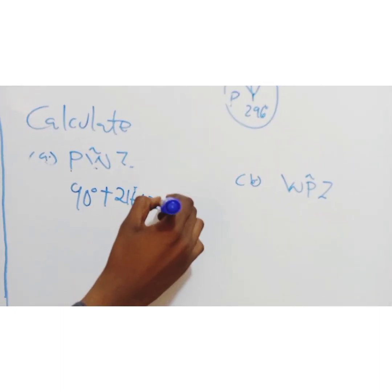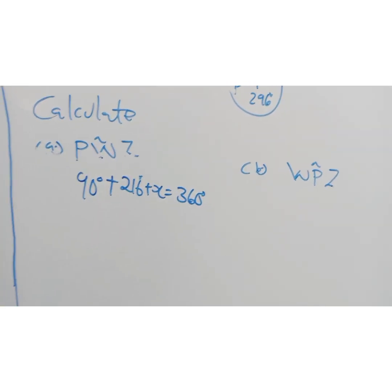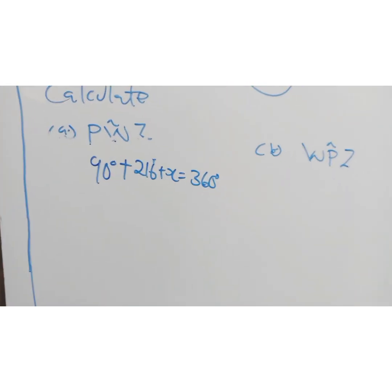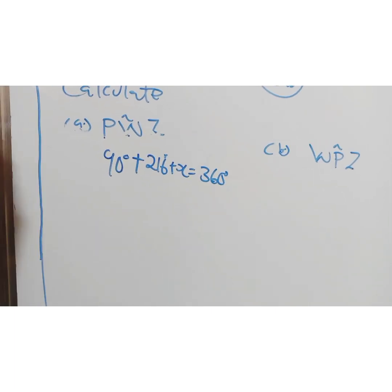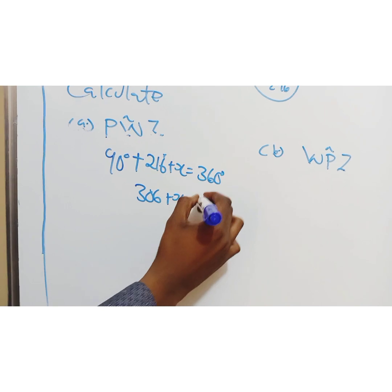Plus x, I don't know, so I'm trying to find it. It's close to 360 because the full circle adds up to 360. So 90 plus 216 gives me 306 plus x equals to 360.